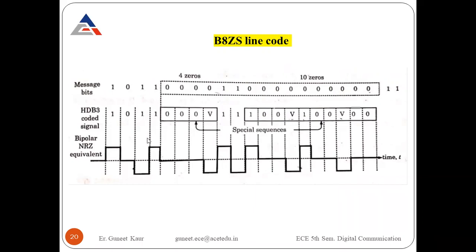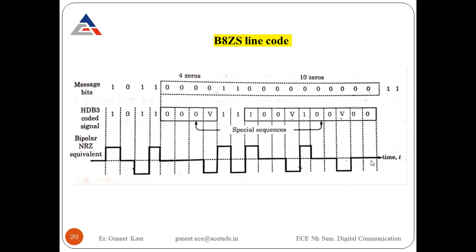For the B8ZS waveform: for one it is high, for zero it is zero, and for the next one it uses alternate mark inversion (negative). The pattern follows AMI for regular bits, and the 8-bit special sequence is inserted wherever eight consecutive zeros occur. With this, we have completed our discussion of line codes.